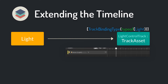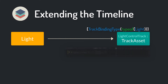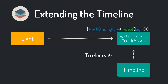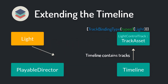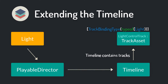Now in Unity you are able to drag and drop the light object into your track. As a side note — it may seem like you're binding the light object directly to the track, but instead the light object is bound to the PlayableDirector which plays your timeline. This has the benefit that you can reuse the timeline and play the same cutscene on different light objects.